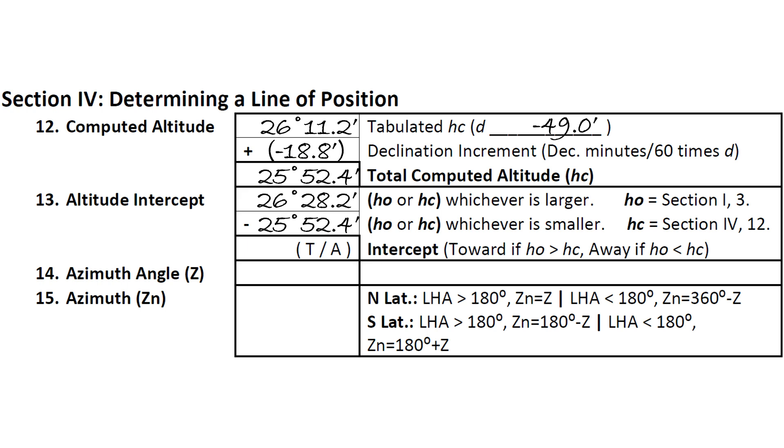Now, we simply subtract one from the other and write the difference, which should be a positive value. In our example, we see that HO is greater than HC, so subtracting HC from HO gives us a difference of 35.8 arcminutes for our intercept.